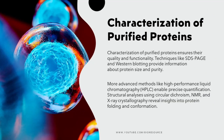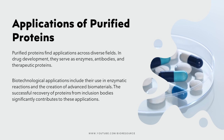Now that we have the protein purified, how do we characterize it? We scrutinize purified proteins with techniques like SDS-PAGE and Western blotting to check size and purity. For a grander reveal, we can unravel their 3D structures using techniques like circular dichroism and X-ray crystallography. These are the key techniques used for characterizing purified proteins.